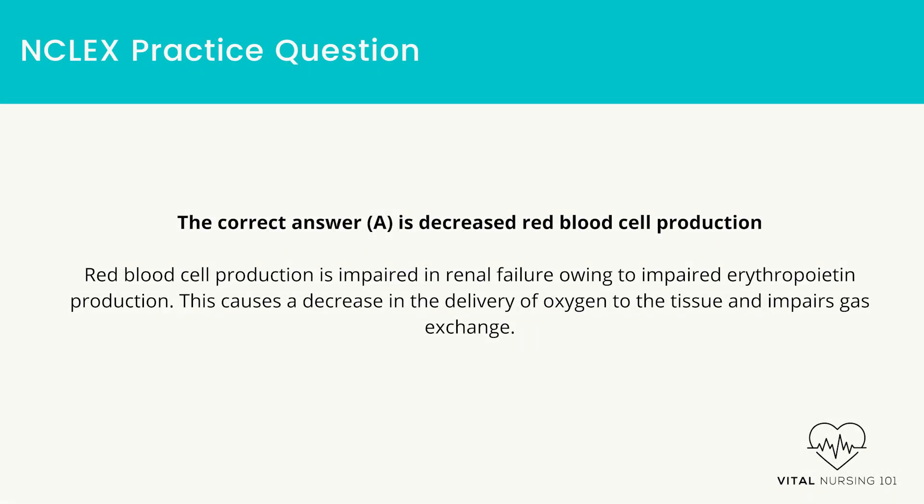The correct answer is decreased red blood cell production. Red blood cell production is impaired in renal failure owing to impaired erythropoietin production. This causes a decrease in the delivery of oxygen to the tissue and impairs gas exchange.